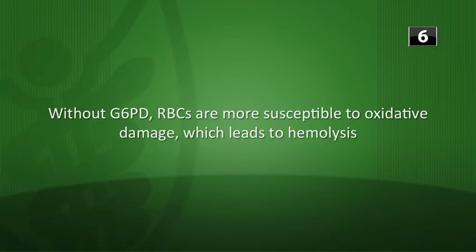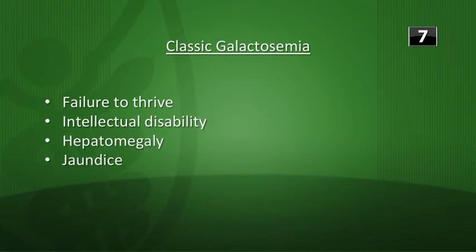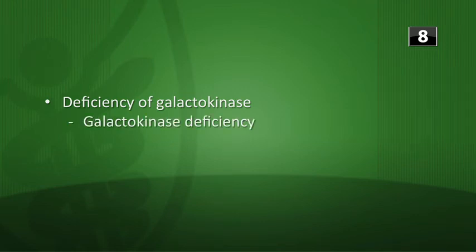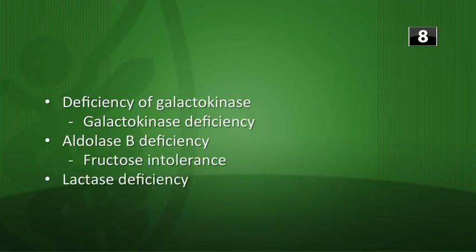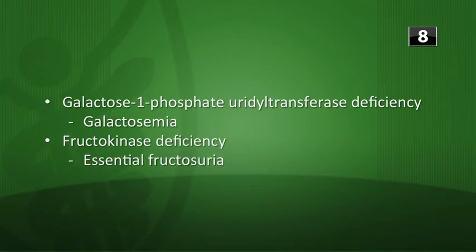Why can G6PD deficiency cause hemolytic anemia? G6PD generates NADPH, which produces reduced glutathione — an important antioxidant. Without G6PD, RBCs are more susceptible to oxidative damage, leading to hemolysis. Classic galactosemia symptoms include failure to thrive, intellectual disability, hepatomegaly, jaundice, and infantile cataracts. Enzyme-deficiency summary: galactokinase → galactokinase deficiency; aldolase B → fructose intolerance; lactase → lactose intolerance; galactose 1-phosphate uridyltransferase → galactosemia; fructokinase → essential fructosuria.